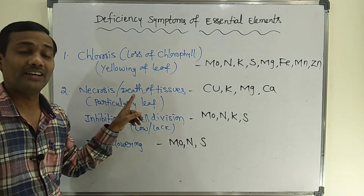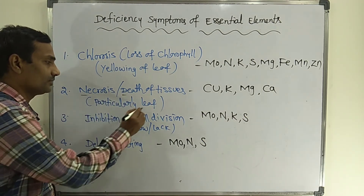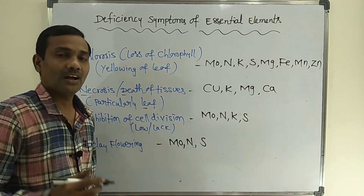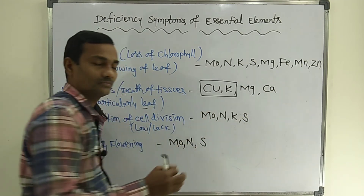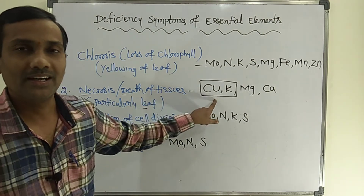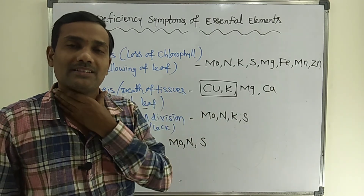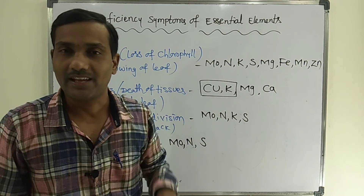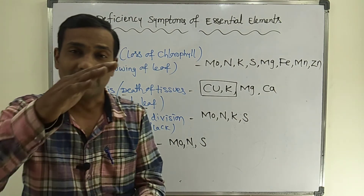For necrosis — death of tissues, particularly leaf tissues: remember the story of a cook. The cook prepared Maggi noodles (Magnesium). The hot Maggi noodles were served to a cat. Because of the hot, spicy nature, the cat died — necrosis, death. So the elements for necrosis are remembered by: Cook (Copper), Maggi (Magnesium), Cat (Calcium), with potassium also included. For inhibition of cell division, remember monks again — molybdenum, nitrogen, potassium, sulfur.